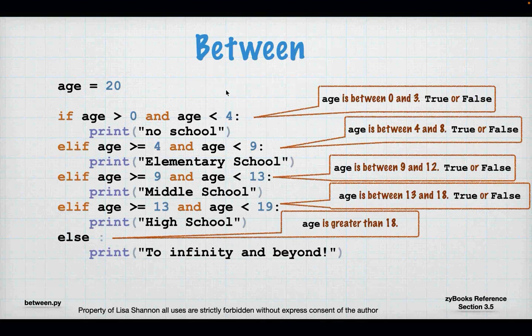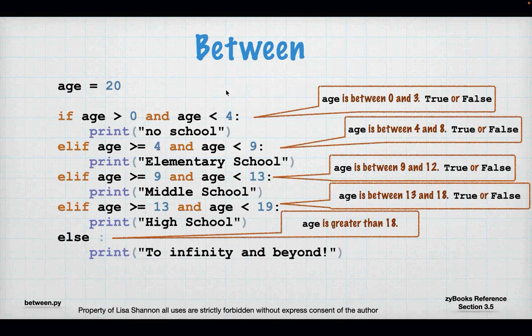Always make sure your betweens don't overlap. The if statement has 'age less than 4' before the colon. The elif statement has 'age greater than or equal to 4', so I've made sure I'm not overlapping my betweens, and I've included 4 by saying 'greater than or equal to 4'. A lot of students have problems with the concept of two things being between each other, and problem statements often use the word 'between'.